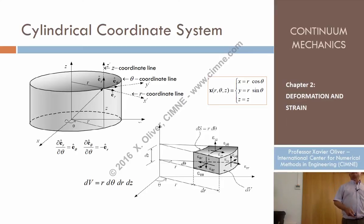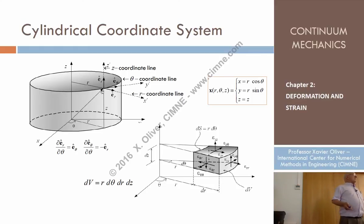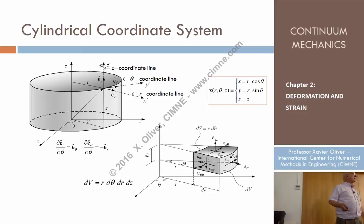It could also be characterized by this angle. If I project that point onto this plane, I obtain that angle — which grows in that direction — called the azimuth angle, theta. And then the third coordinate is the elevation, that distance here. Every point in space can be uniquely characterized by the three values r, theta, and z.